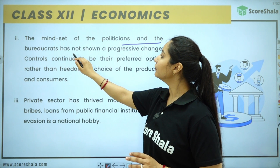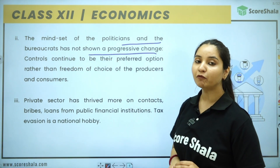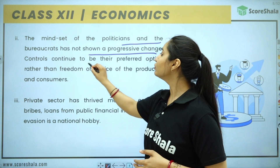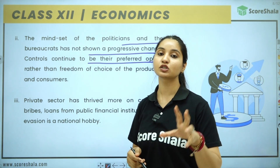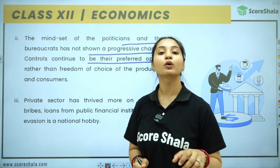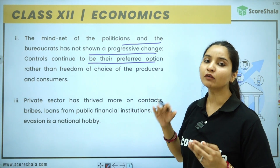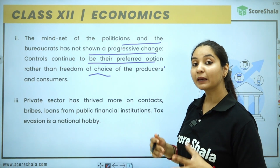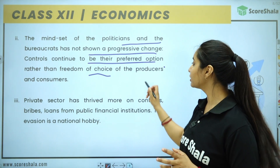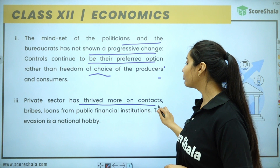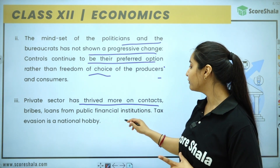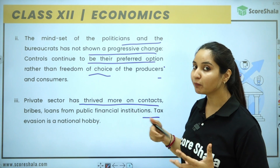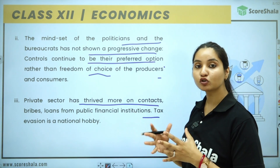The mindset of politicians and bureaucrats has not shown a progressive change. In both countries, the politicians and bureaucrats' mindset has prevented positive changes. Controls continue to be their preferred option rather than freedom of choice for producers and consumers. The private sector has thrived more on controls, bribes, and loans from public financial institutions.